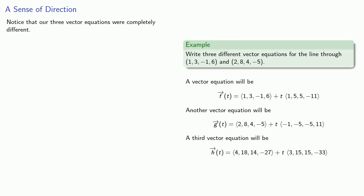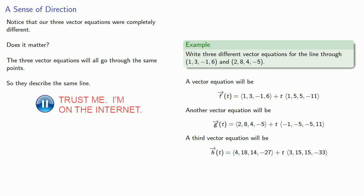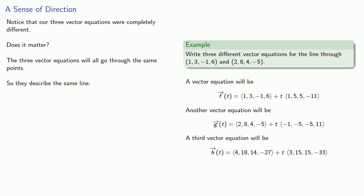You might notice that our three vector equations look completely different — does that matter? It turns out all three describe the same line, because they all pass through the same points. You can prove this algebraically, and you should. Note that f and g both go through the same two original points, and since (4, 18, 14, -27) is on the line defined by f, equations f and h also go through the same two points — so all three must describe the same line.